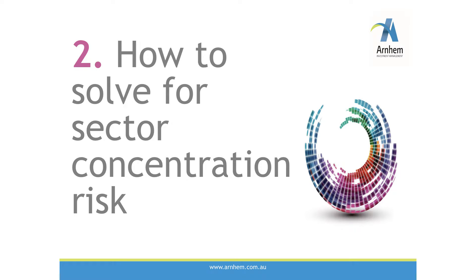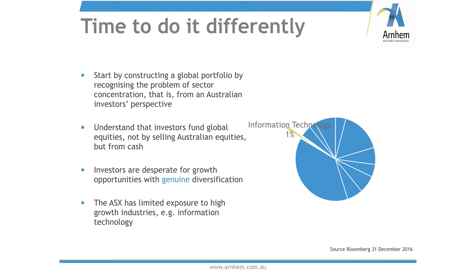Given this concentration problem, combined with the fact that Aussie investors have typically not sold their banks and resources to fund global exposure, it's time to construct portfolios differently — from an Australian investor's perspective. Most standard global equity offerings simply replicate a broader index like the MSCI World, including the very sectors we're talking about. We also know investors are desperate for growth opportunity and genuine diversification — exposure to sectors they don't have yet. The ASX has very limited exposure to high-growth industries; information technology is currently only 1% of the ASX.